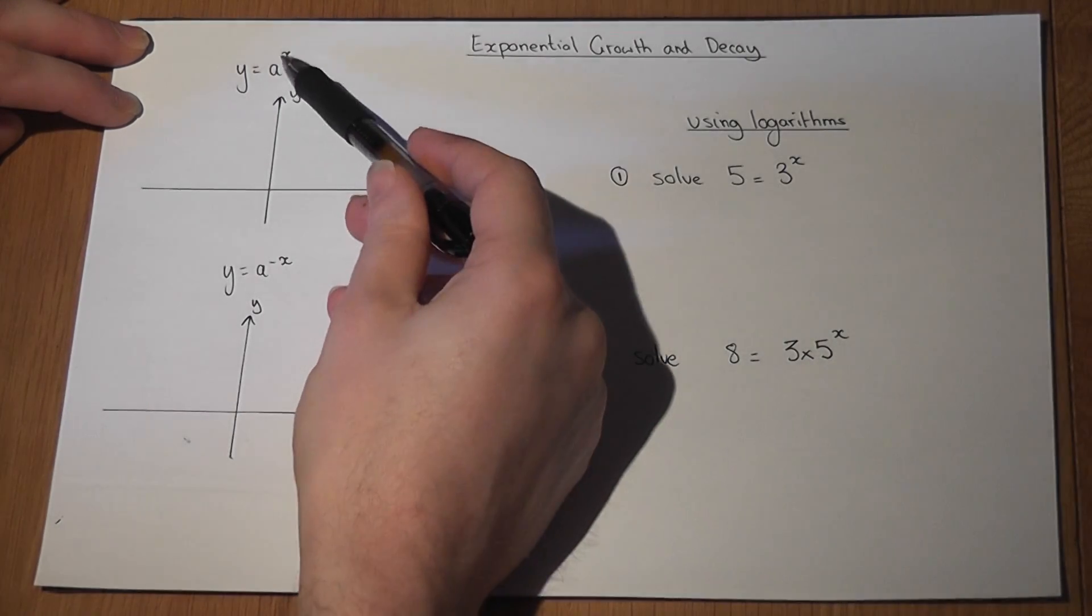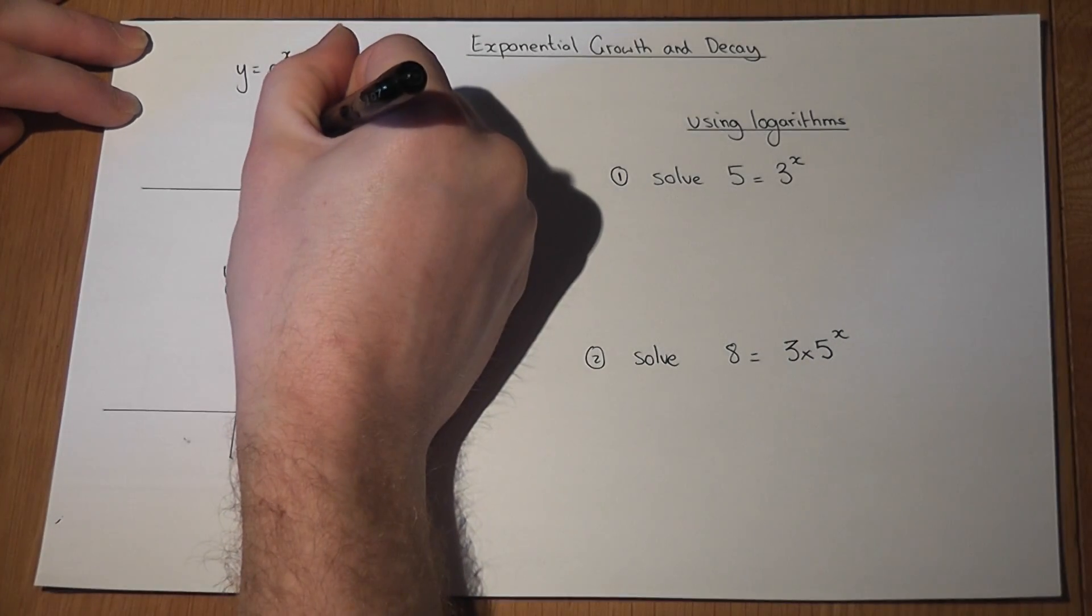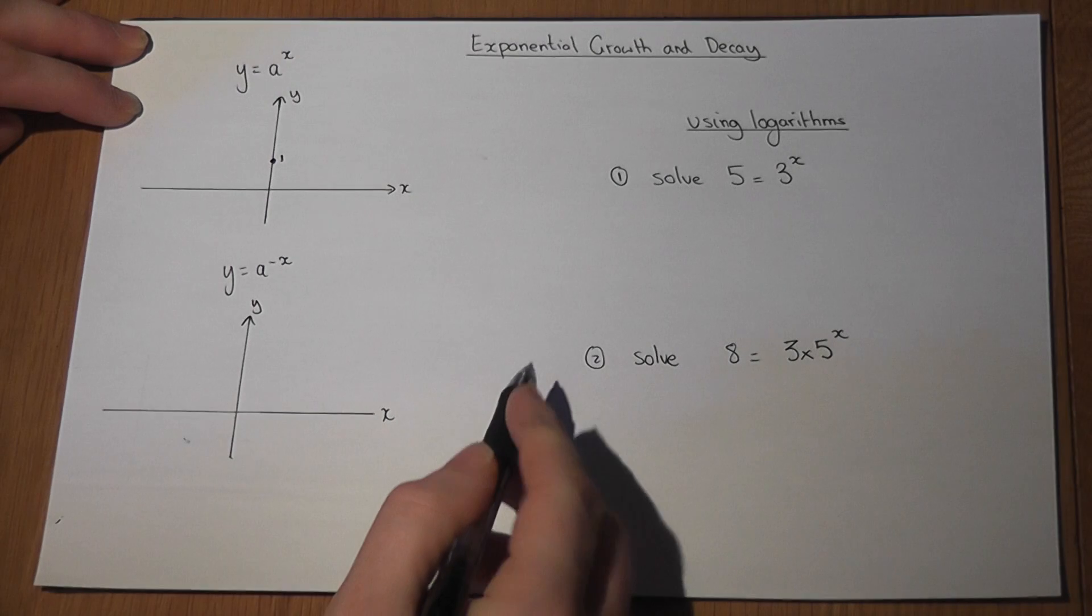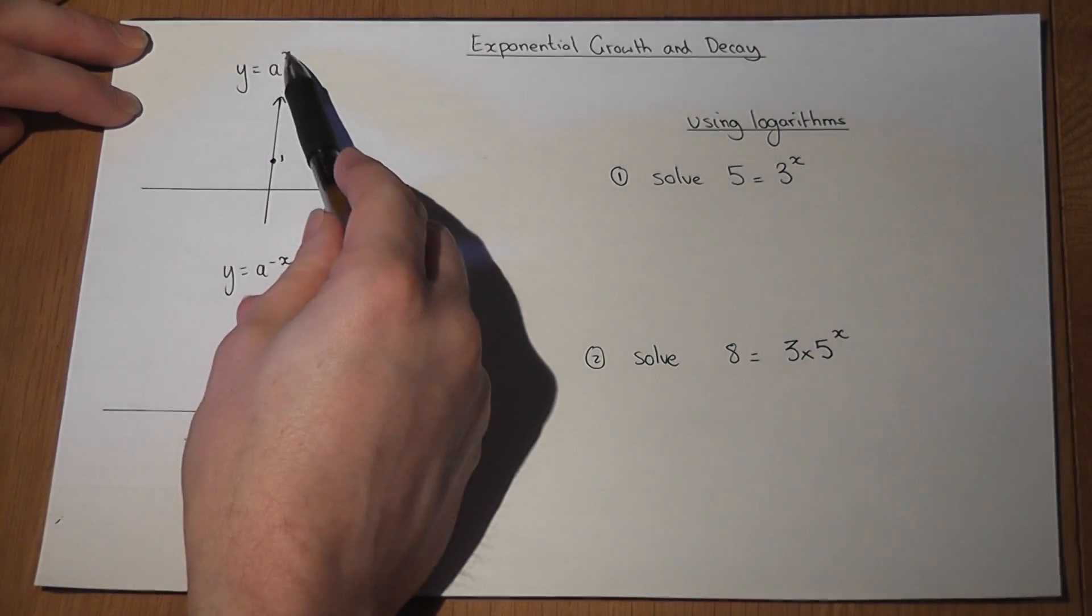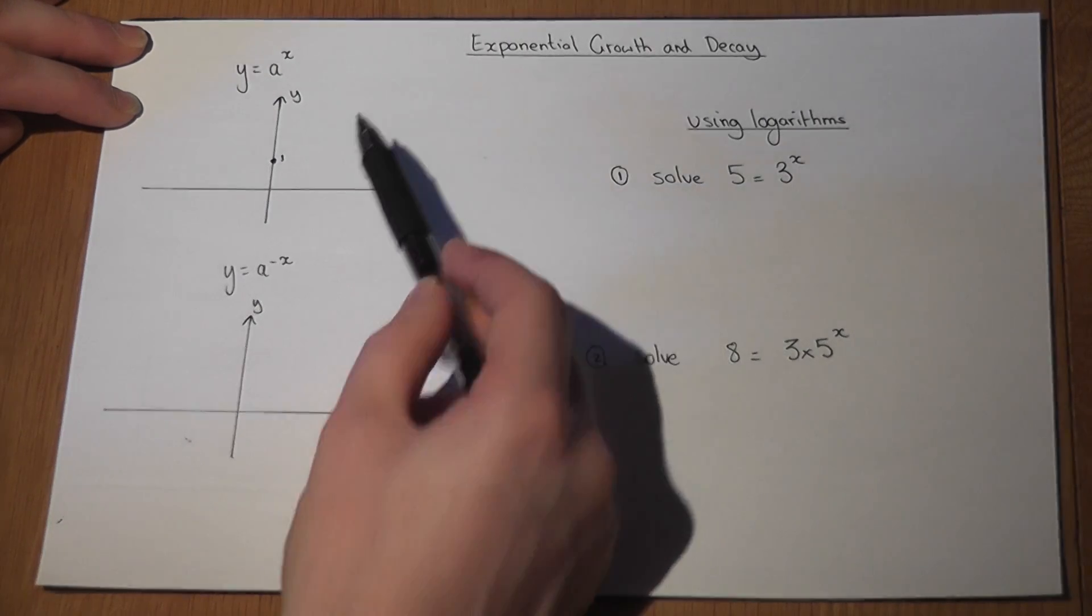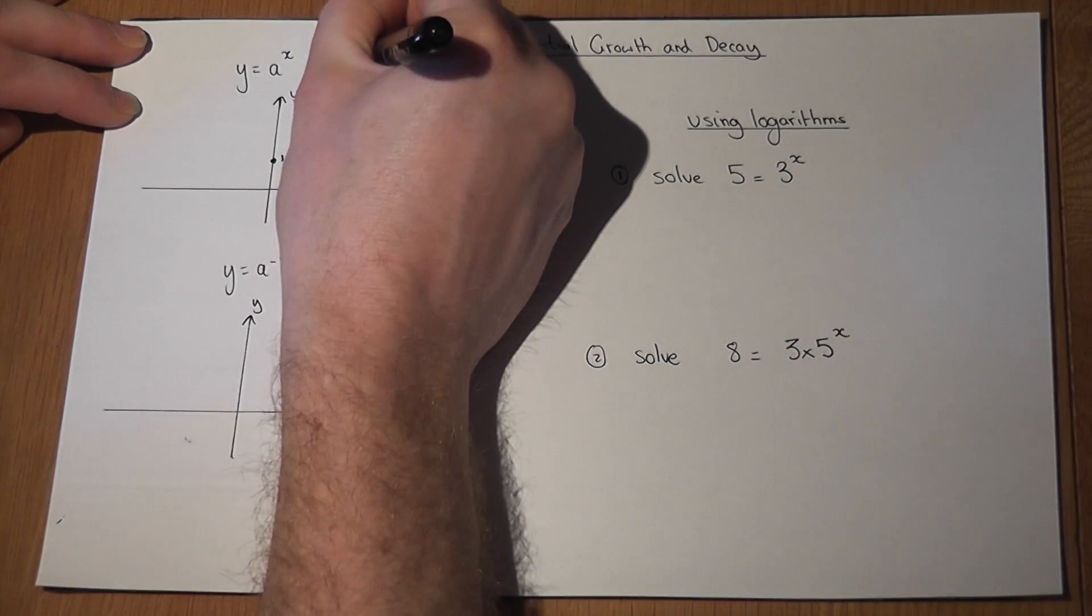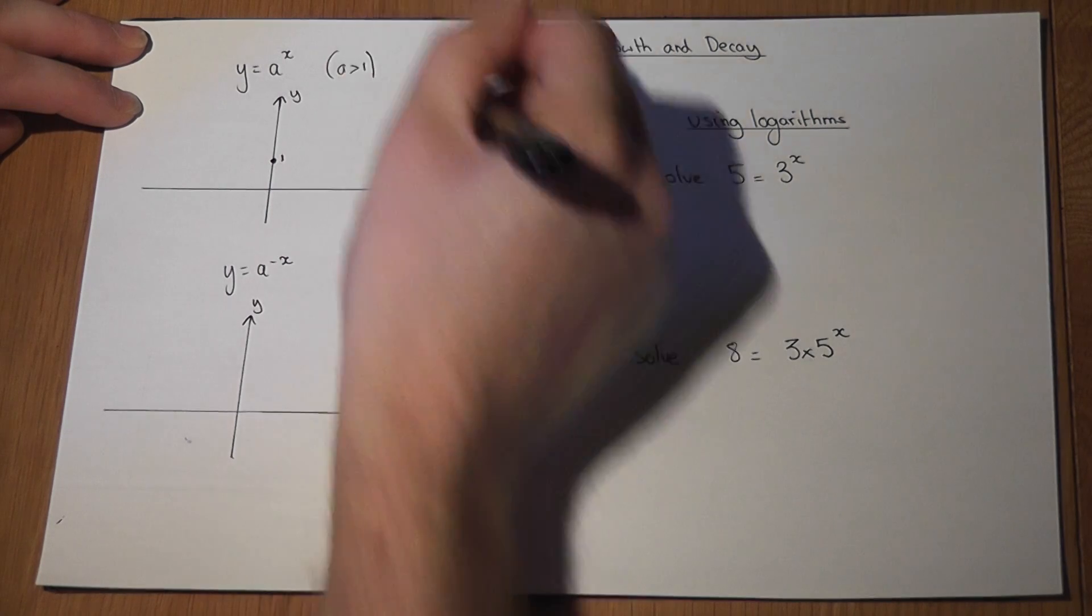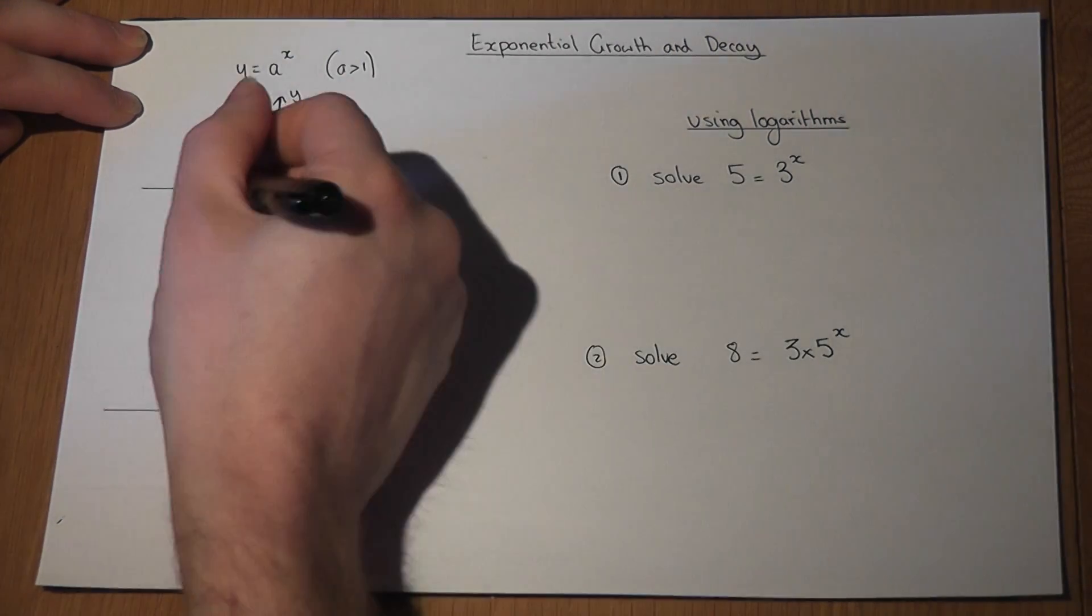Anything to the power of 0 is 1, so this graph passes through 1 on the y-axis. But as x gets larger, this graph gets larger and larger for a bigger than 1, and the graph basically does the following.